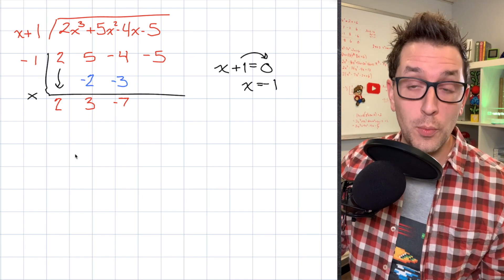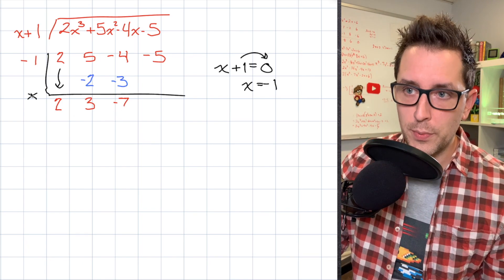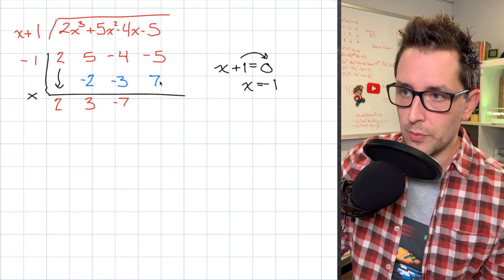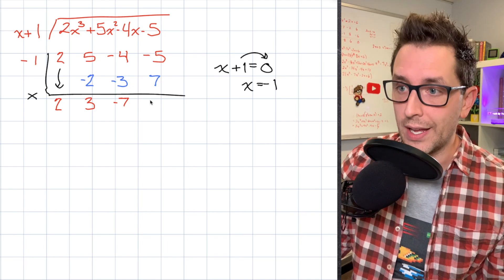I'm going to repeat this process one more time. So I'm going to take that negative 7 multiplied by negative 1. I'm going to get 7. I'm going to place the result right here. And I'm going to add straight down to get 2.